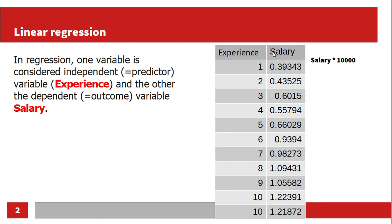In regression, you try to predict continuous values. Assume we have this table with only one variable — experience — and the last column is the value to be predicted. In regression, this variable is independent, and the last column is the dependent variable, meaning it depends on the experience column.